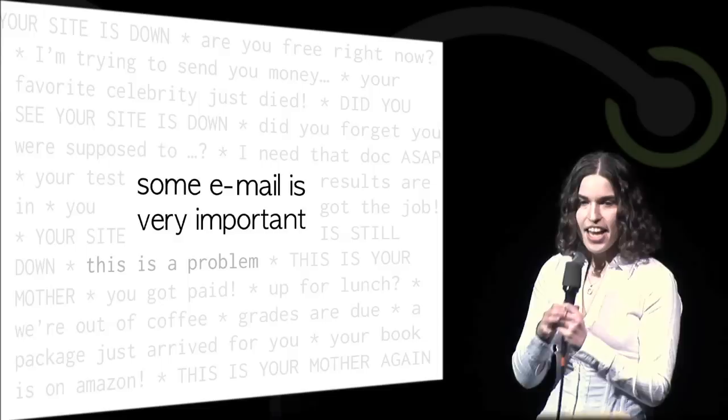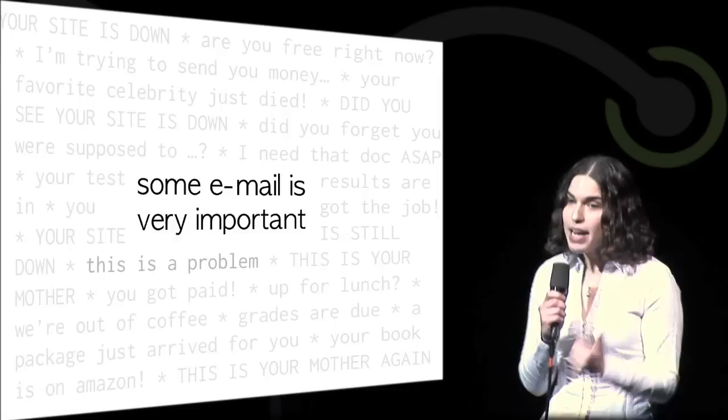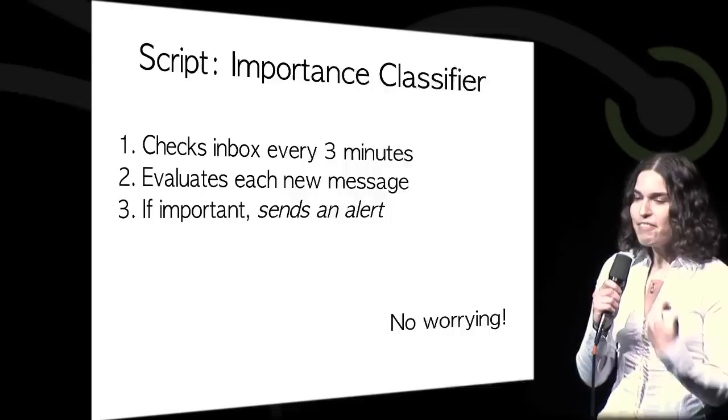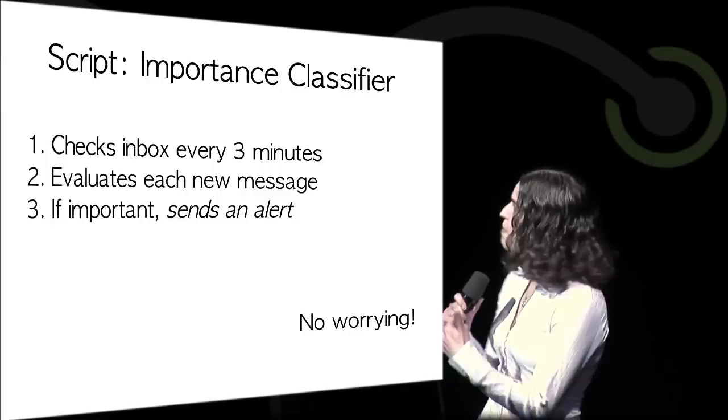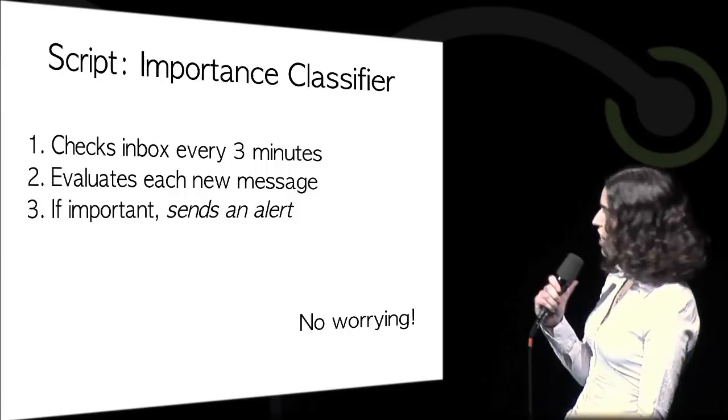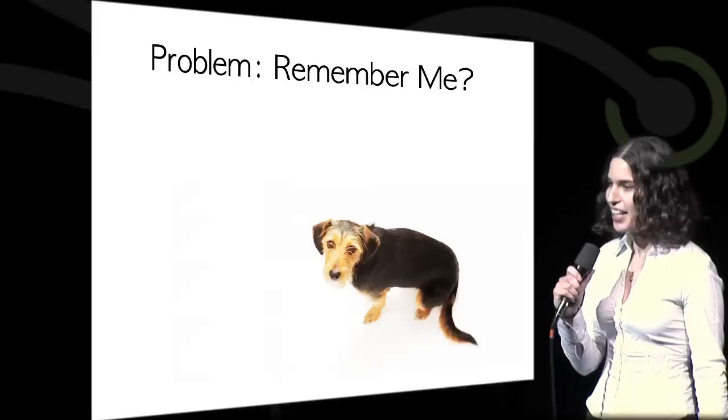So some email is really important. But most of your email is not important. And I know you're all on your iPhones right now, checking your email. And you're doing that because you think maybe something important just showed up. But it probably didn't. It's only about 2% that you actually care about. So I have a document classifier that tells me when I have important email. And it's trained off email I thought was important in the past. So it's statistically learning what's important and what's not. And then it tells my phone if I have important email. So I don't have to rush to my computer when I get home anymore.